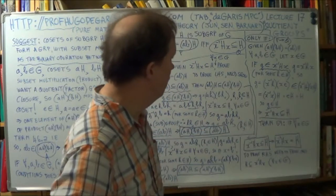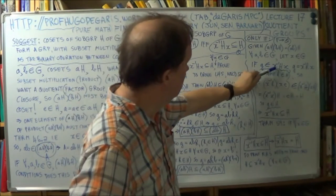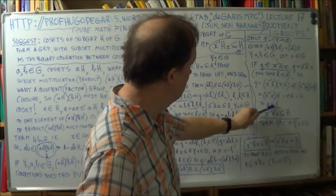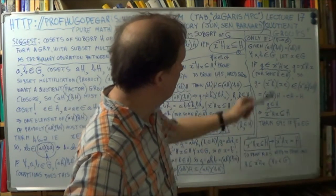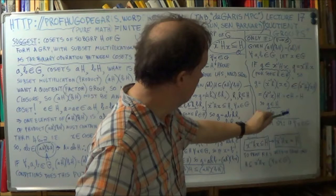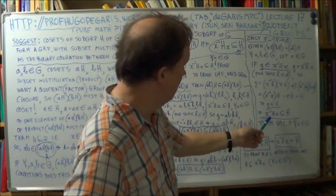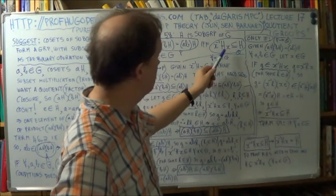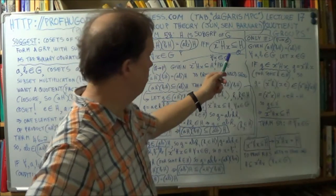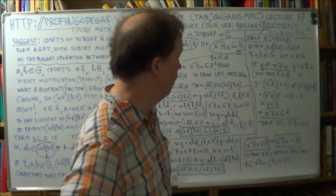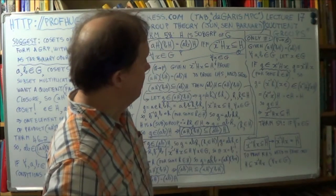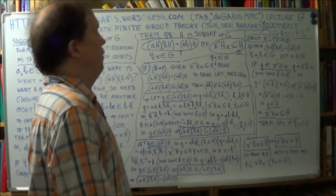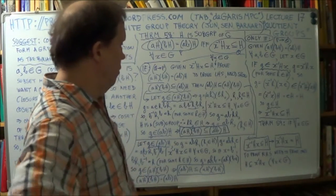So g belongs to H. So if g belongs to X inverse HX, then g belongs to H. Therefore, this is a subset of that. So X inverse HX is a subset of H, which is that, which is what we had to prove. So we've just proved Q. So we have theorem 58 now proved.